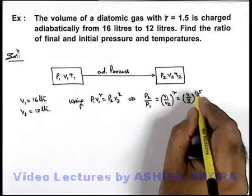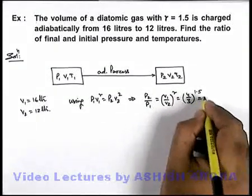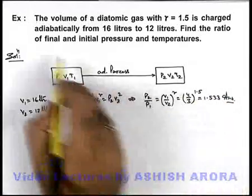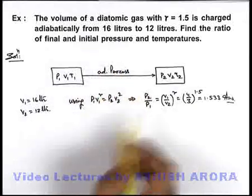If we find 1.5 power of 4 by 3, this will give us 1.533, that will be the answer to this problem for the ratio of final and initial pressure.